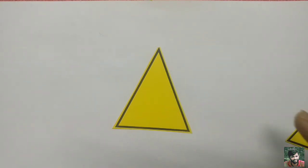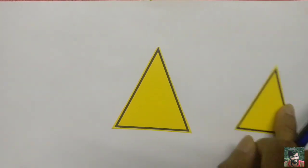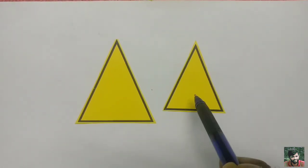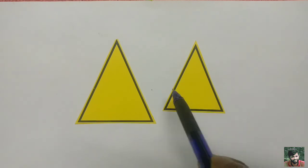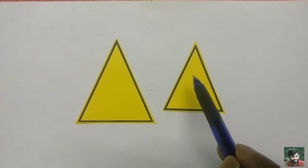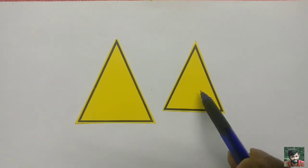Now if I have to say that this triangle is similar to this triangle, then something of this triangle has to be equal to something of this triangle as well.